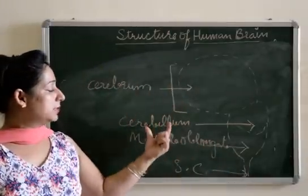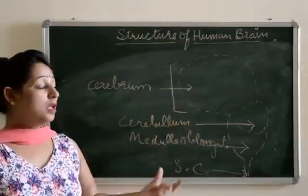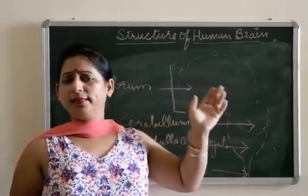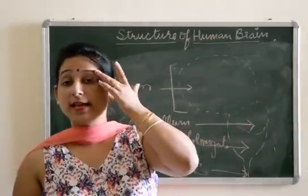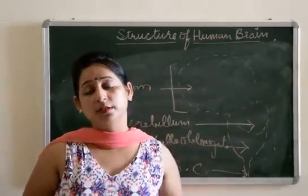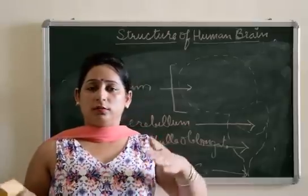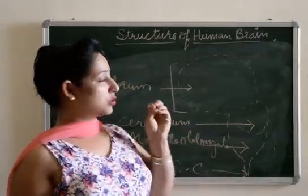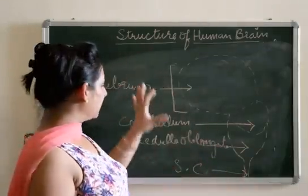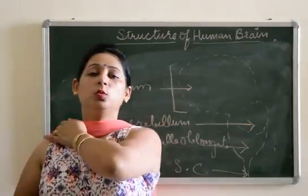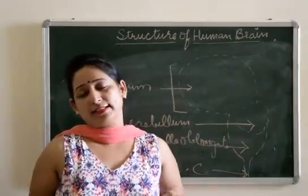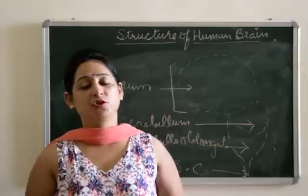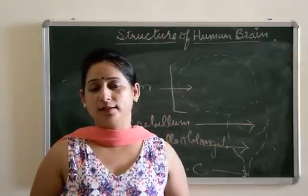We have discussed cerebrum, cerebellum, and medulla oblongata. Some related parts — like in the forebrain, there is the diencephalon, which includes the hypothalamus and thalamus. The hypothalamus mainly controls the body's temperature. These are certain parts of the brain which control different activities. For class 10 exams, whether CBSE or ICSE, questions will be related to all three main parts, and the explanation given is more than enough for writing answers.